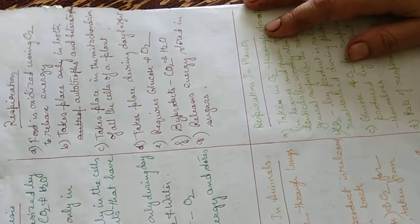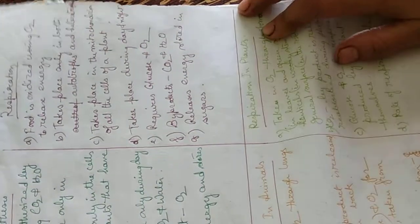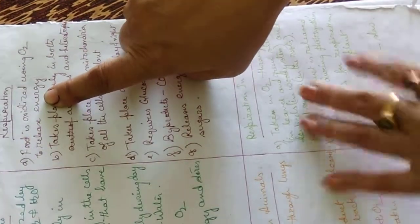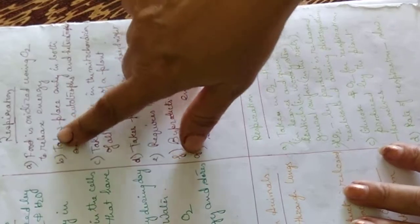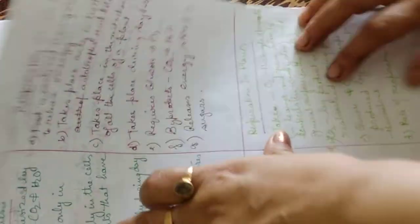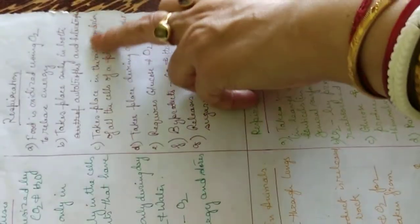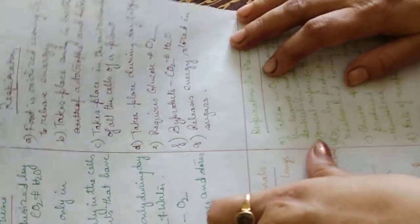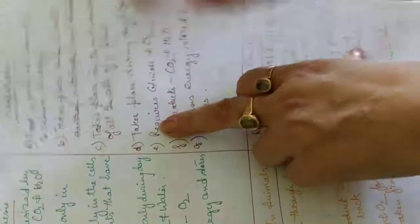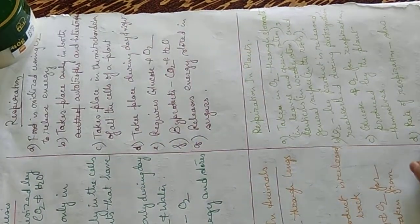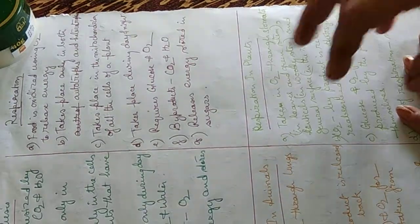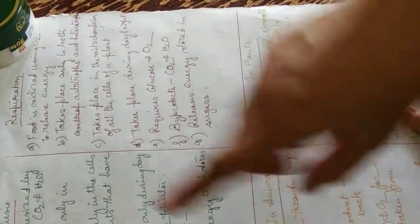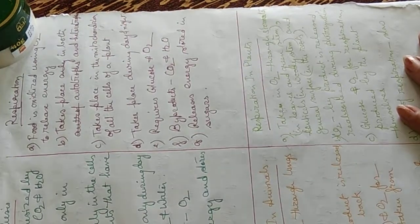Differences between photosynthesis and respiration: in photosynthesis food is prepared using carbon dioxide and water; in respiration food is oxidized and broken down to release energy using oxygen. Photosynthesis occurs only in autotrophs with chlorophyll; respiration occurs in mitochondria of all cells. Photosynthesis occurs only during daytime; respiration can happen day and night. Photosynthesis requires carbon dioxide and water; respiration requires glucose and oxygen. The byproduct of photosynthesis is oxygen; byproducts of respiration are carbon dioxide and water.